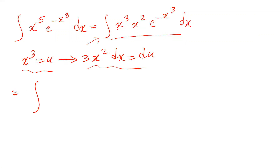you can rewrite this one as the integral of — instead of x³ I write u, and instead of x² dx I write 1 divided by 3 times du, because 3x² dx is du, therefore x² dx is 1 divided by 3 times du.